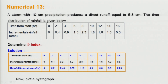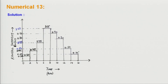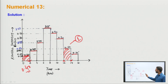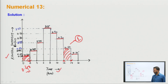The rainfall intensities are calculated from incremental rainfall divided by the time interval. Values are: 0.20, 0.45, 0.75, 1.15, 0.90, 0.80, 0.50, and 0.25 centimeters per hour for successive 2-hour periods. For example, 0.5 cm/hr intensity over 2 hours gives 1.0 cm incremental rainfall, which matches the table data.